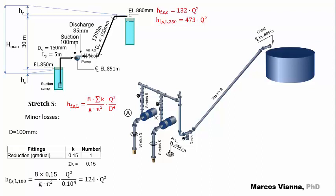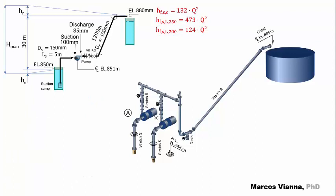There's a gradual reduction. In cases like this, we consider the smaller diameter. Here's what we find. We'll leave it up here.